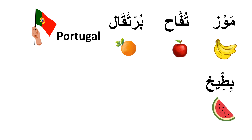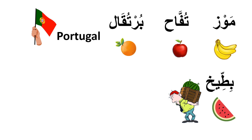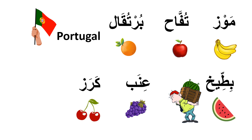بطيخ — watermelon. I feel like the sound of بطيخ is kind of heavy — just like the fruit, big and heavy. Then we have عنب — grapes, كرز — cherries. And this one is super easy: ليمون — lemon.